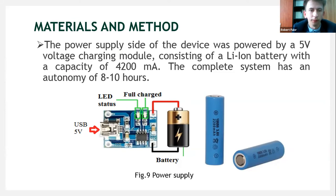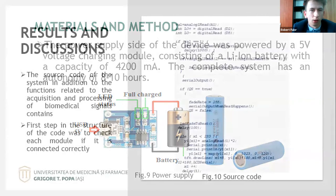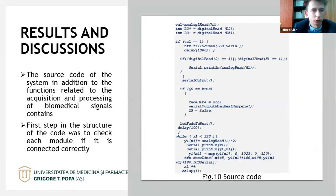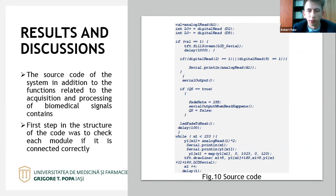The functionality and results and discussion: the source code of the system addresses the functional reality of the acquisition and processing of biomedical signals. The first step in the code structure checks whether each module is connected correctly. Figure 10 presents the source code of the system.